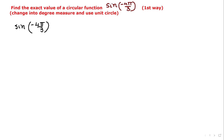Today we will learn how to find the exact value of a circular function sine(-4π/3) using two steps. First, change the radian measure into degree measure, and then we will use the unit circle. I will consider that as the first way to do it.